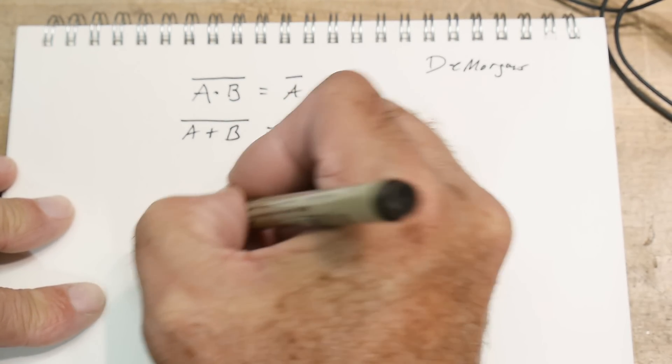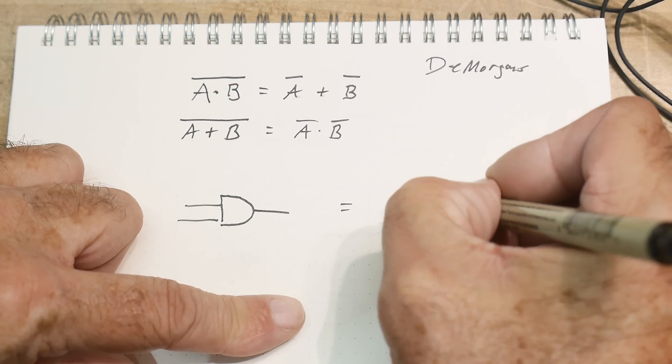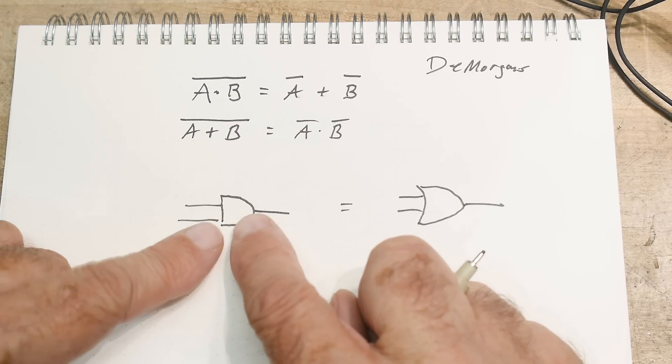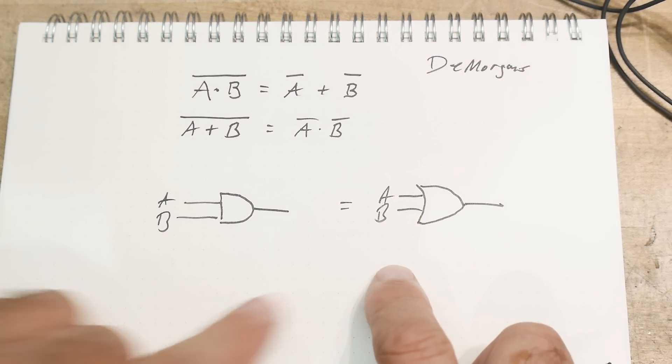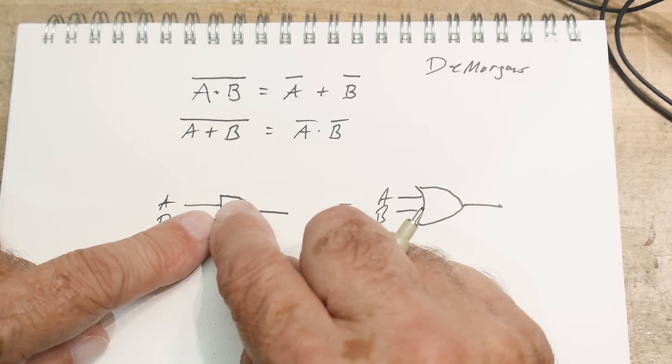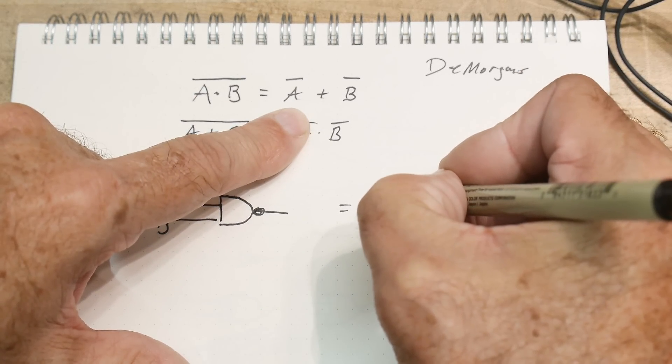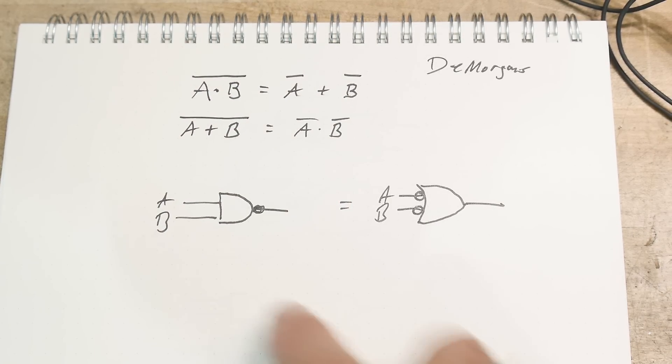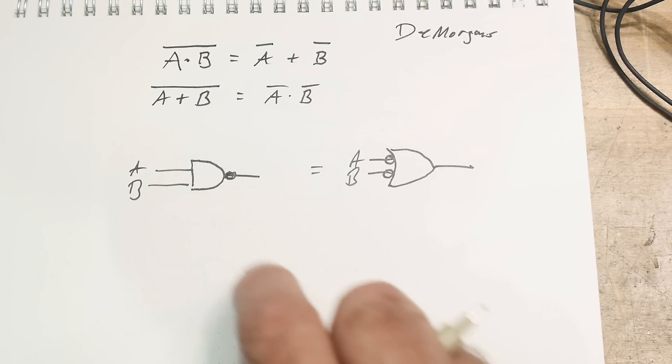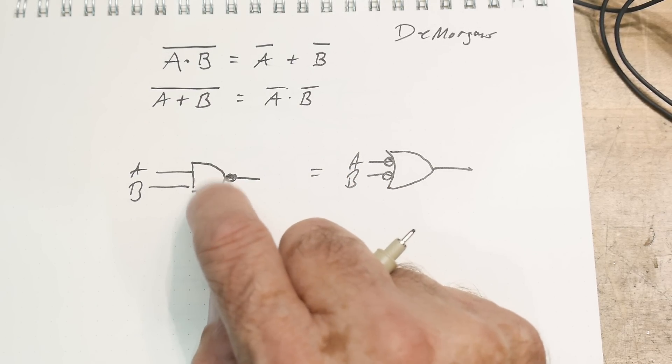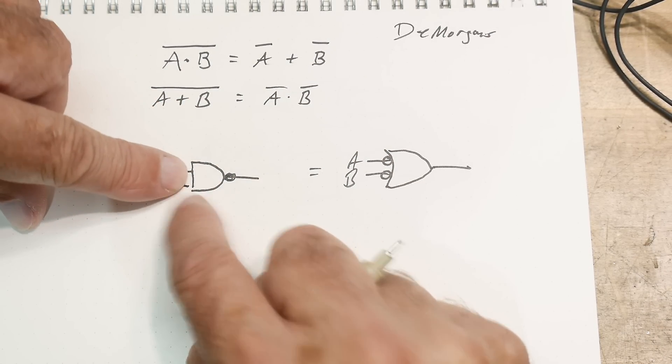So this is A AND B NOT equals NOT A OR B. This says A OR B NOT equals A NOT AND B NOT. Let's look at this one - what does this say? A AND B. So we have an AND function over here, and on this side we have an OR. Some type of AND equals some type of OR.